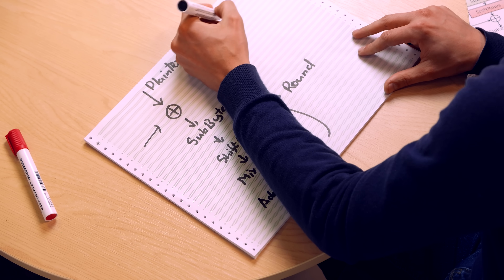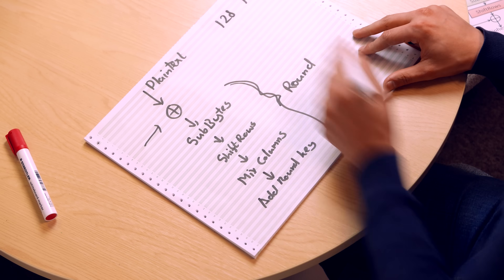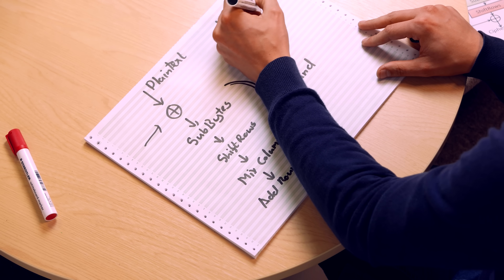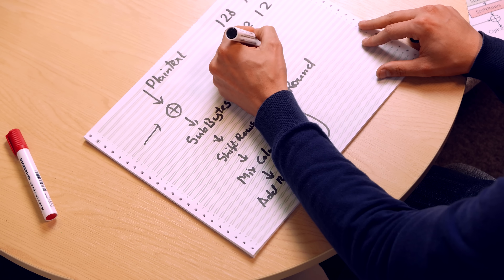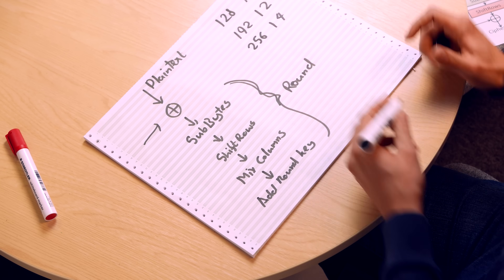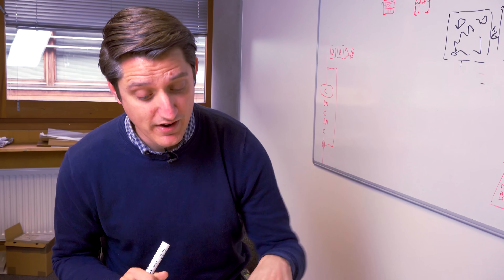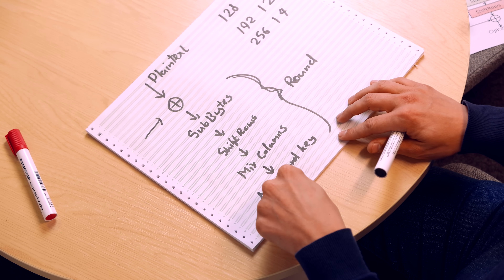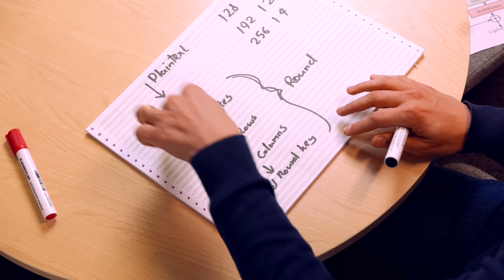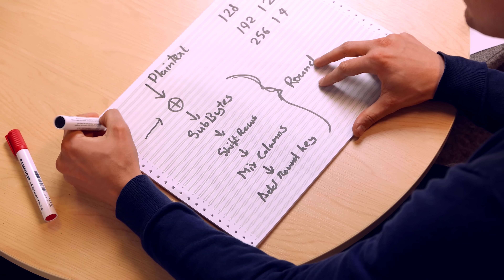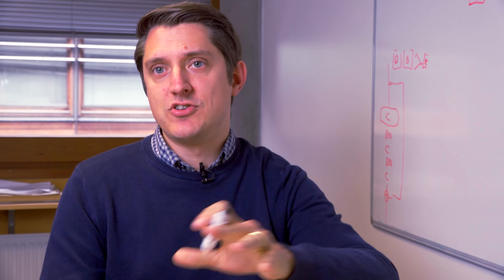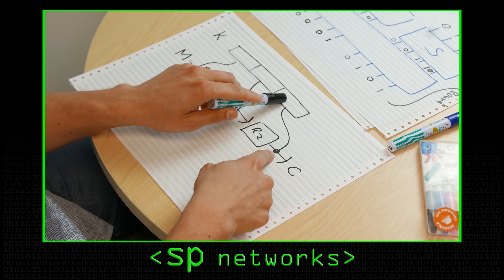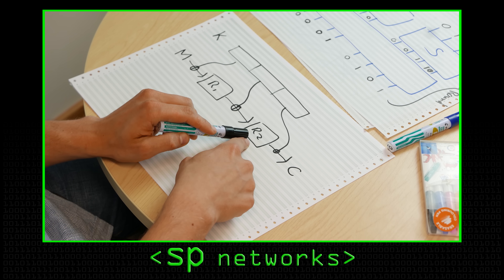When you've got a 128-bit key, you have 10 of these rounds. When you have a 192-bit key, you have 12 rounds. And when you have a 256-bit key, you have 14 rounds. But in all other regards they're exactly the same. This is also an XOR down here at our round key — we don't put the same key in every time.